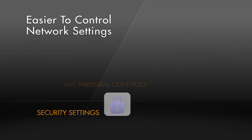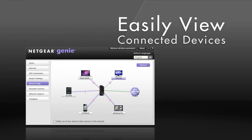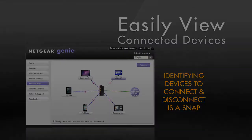You can even view a map of all the devices that are connected to your home network to make sure everything is online that you want, and eliminate ones you don't.